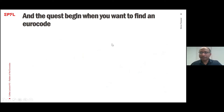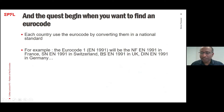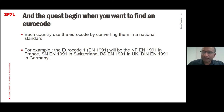The challenge begins when you want to find a Eurocode. To make it simple, each country uses Eurocodes by converting them into their national standard. This is a tricky way to convert the standard. Eurocode 1, officially EN 1991, becomes NF-EN-1991 in France, SN-EN-1991 in Switzerland, BS-EN-1991 in the UK, and DIN-EN-1991 in Germany. Each country converts and sells the Eurocode by transforming it into a local standard.